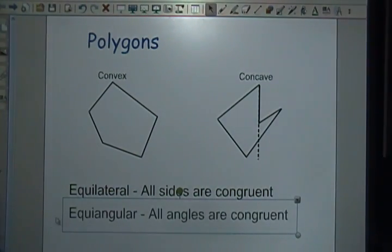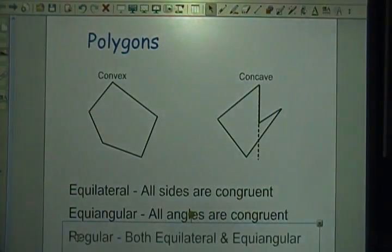After equilateral, we have what's called equiangular, where all the angles are equal or congruent. If a shape is both equilateral and equiangular, we call that a regular polygon.